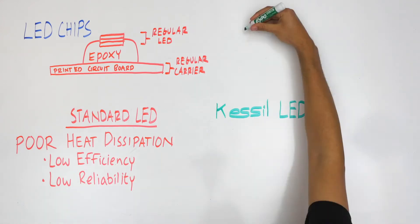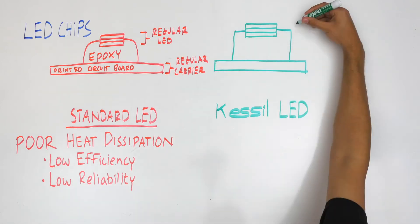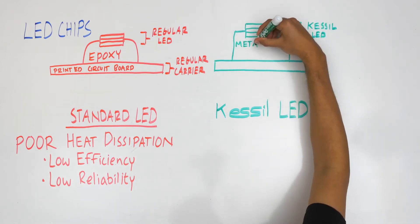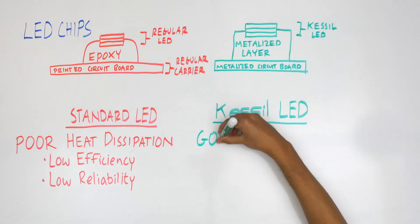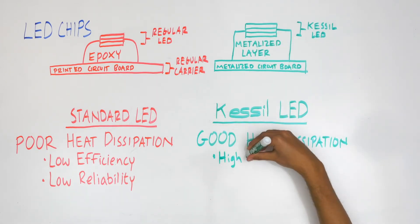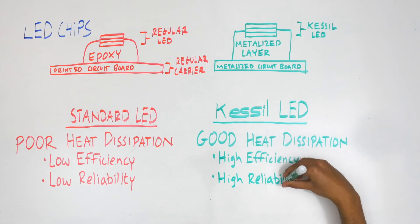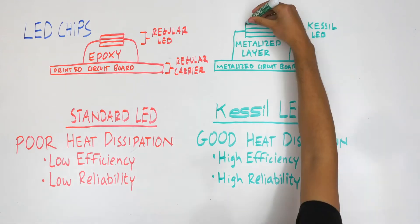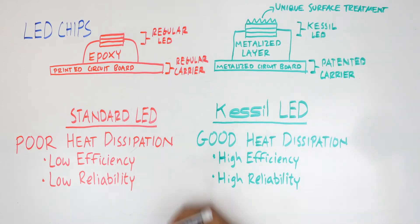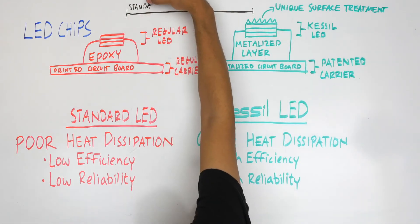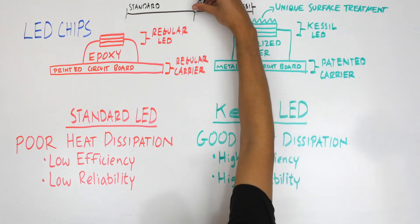Kessel generally manufactures metalized LED chips. Metalized LED chips that are bonded to an MCB, or metalized circuit board, allow for higher thermal efficiency. This is similar to how high-end CPU and GPUs in computers are made. Kessel LED chips are one of a kind, from the unique surface treatment to the patented carrier. No other company uses LED chips like these for aquarium lights.